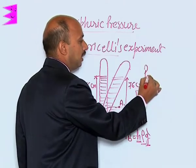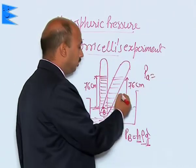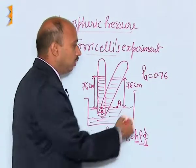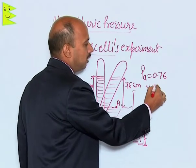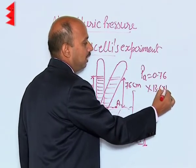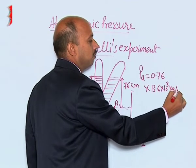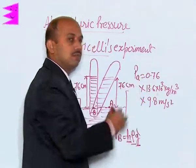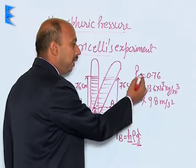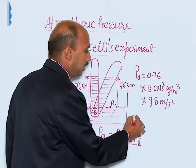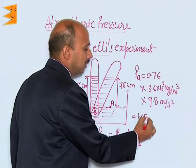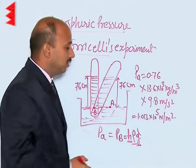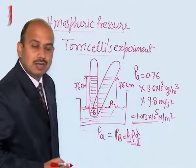We can find P_A, that is atmospheric pressure. h is 76 centimeters, so we write 0.76 meters × density of mercury 13.6 × 10³ kg/m³ × g = 9.8 m/s². Multiplying all three quantities, we get 1.013 × 10⁵ Newton per meter square. This is the value of atmospheric pressure at sea level.